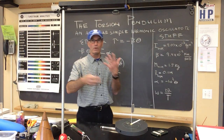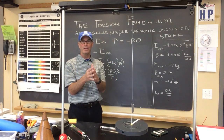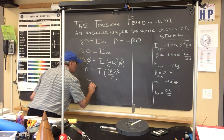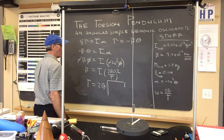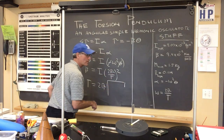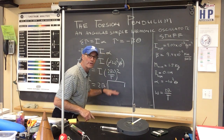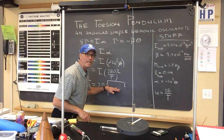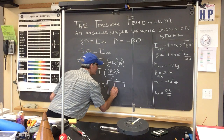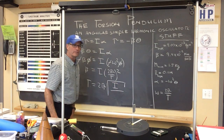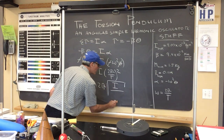Assuming you know algebra, we take this expression and solve it in terms of the period T. So T is equal to 2 pi times the square root of I over beta — the angular equivalent to mass over spring constant. If you remember the period of oscillation for a mass on a spring is the square root of m over k, for a rotating system the angular equivalent of mass is I and the rotational equivalent of k is beta, giving us I over beta.